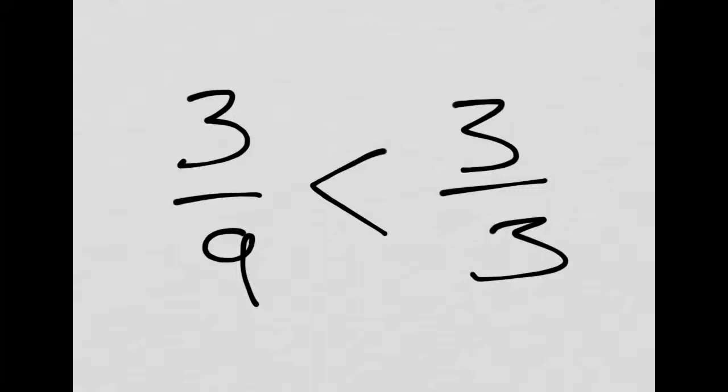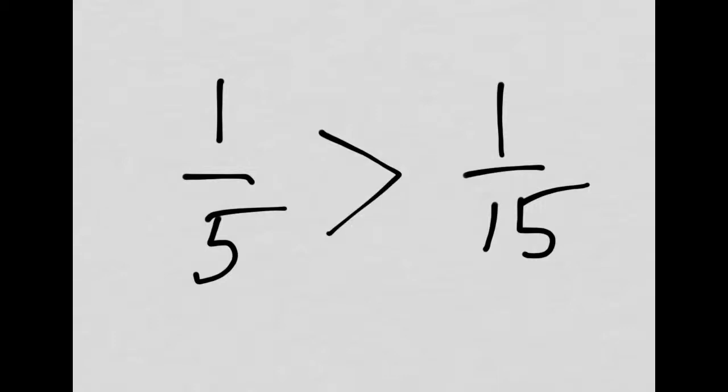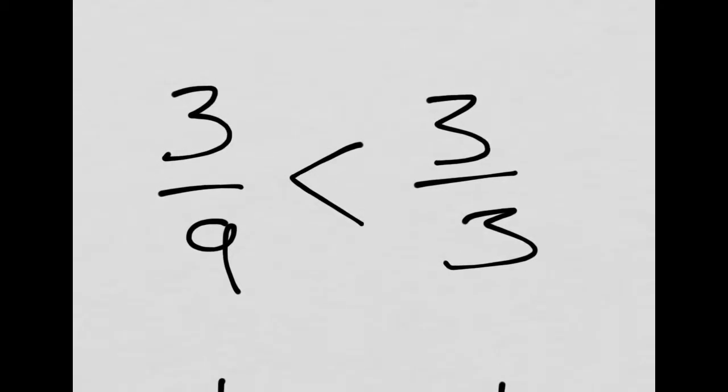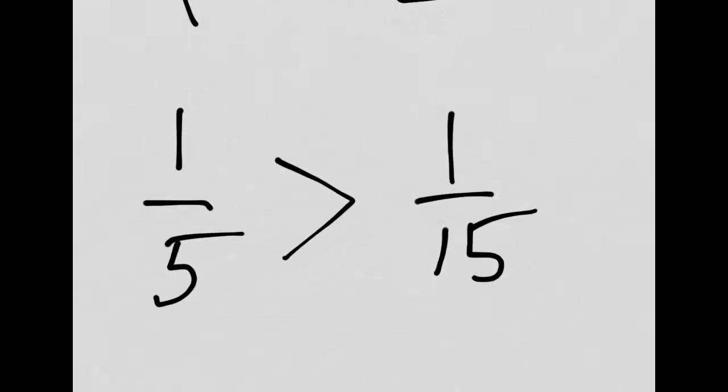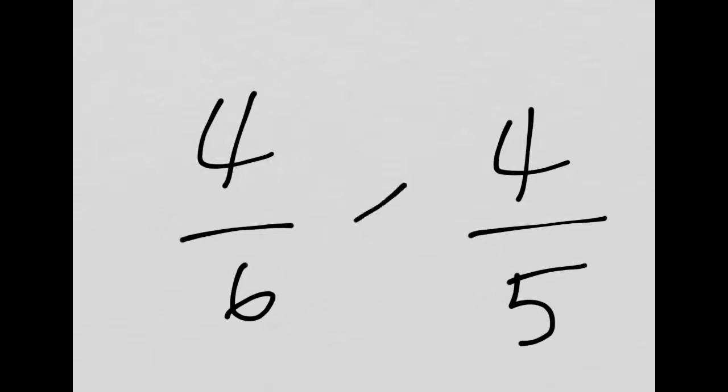Let's do a couple to practice. I'm going to show you three problems one at a time. I want you to think about what symbol we should put in — a greater than sign, a less than sign, or an equal sign. The first one gets a less than sign. Next one: one fifth is greater than one fifteenth, so we put in a greater than sign. And the last one: four sixths is less than four fifths, so that gets a less than sign.